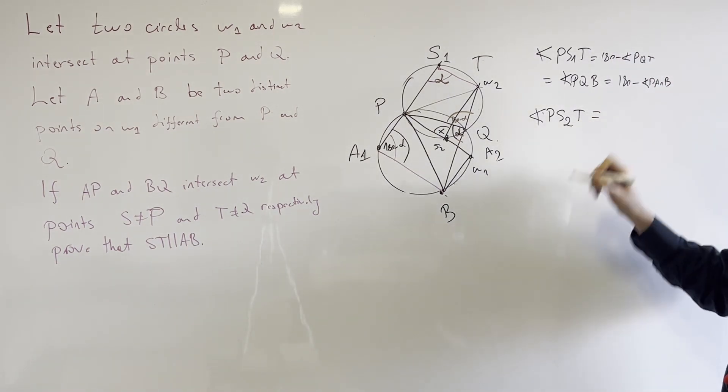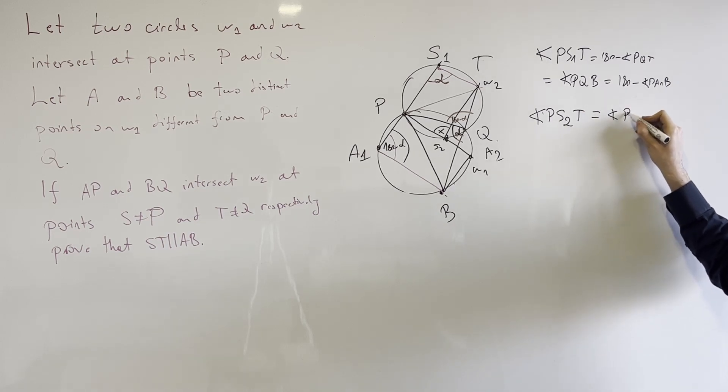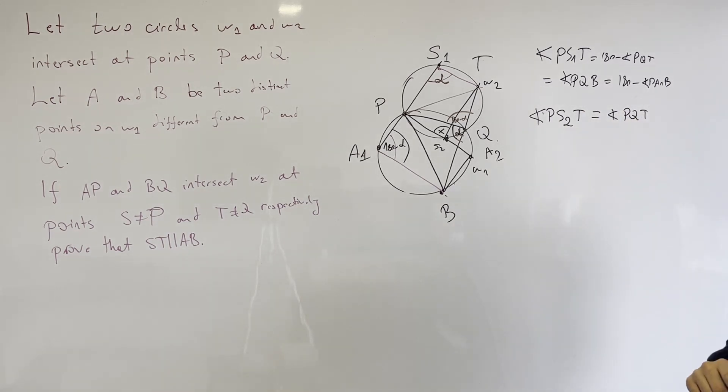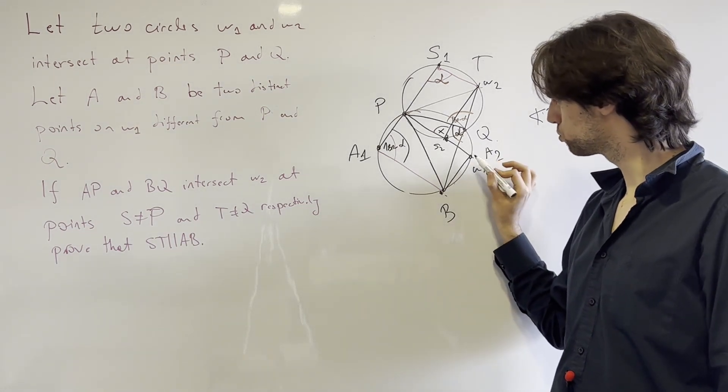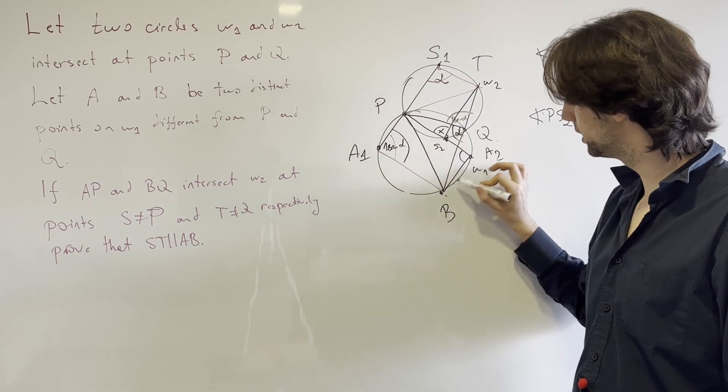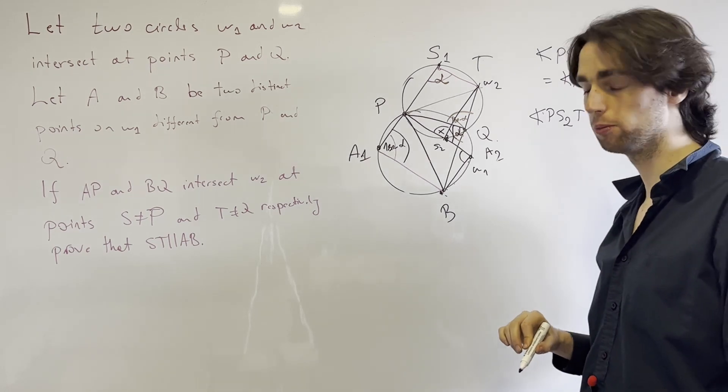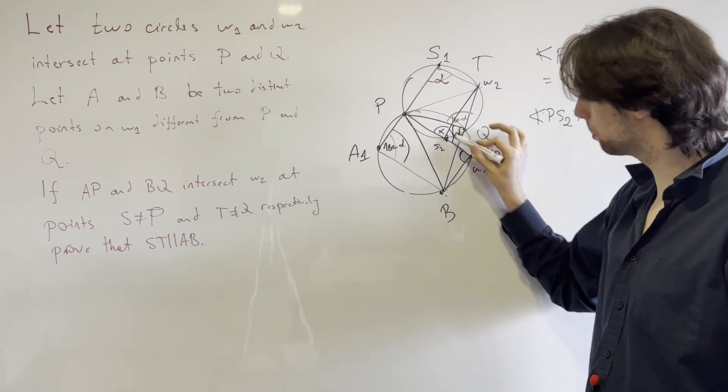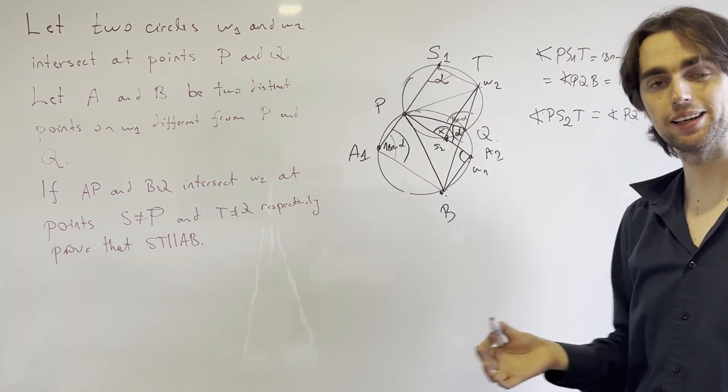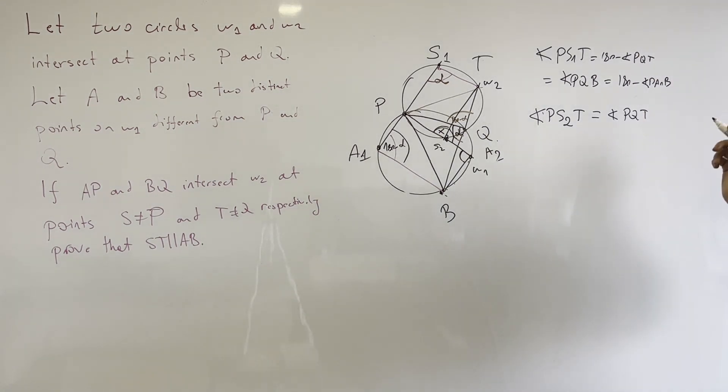Now we have the angle PQT. Well in this case the angle PQT isn't 180 minus x, but it's actually equal to x. And what are we looking for? Well now we're really looking for this angle. We need A2 parallel to S2B, this means these two angles need to be equal.